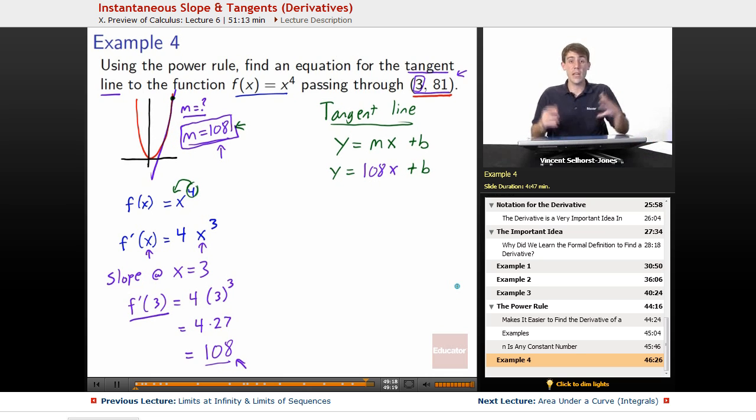So, how can we figure out what is b to finish creating our equation for the tangent line? If you're going to figure out what any line is, you need to know what the slope is and what the y-intercept is, what m is and what b is.